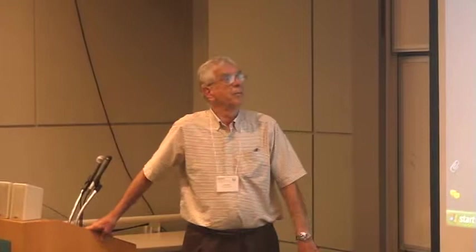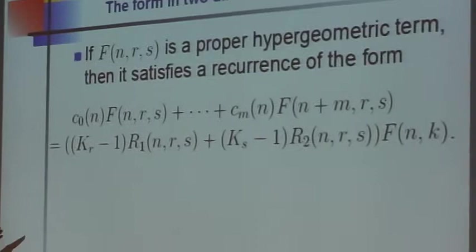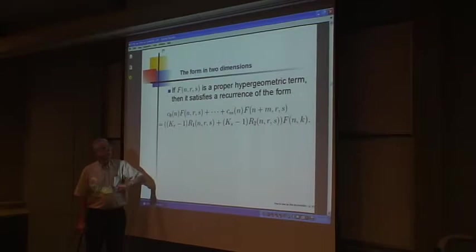The general theorem in this case says that f(n,r,s) satisfies a recurrence which on the left-hand side looks like that. On the right-hand side you have the forward shift with respect to the index r, and here's the forward shift with respect to the index s minus 1, acting on two different rational functions multiplied by f(n,k). So this is the form of the recurrence that a proper hypergeometric term in two summation variables satisfies.